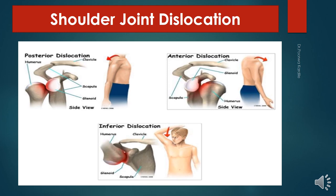This slide is of shoulder dislocation. The shoulder joint is the most mobile joint — it is multi-axial with a wide range of movement, but mobility compromises stability. The shallowness of the glenoid fossa and weak ligaments make the joint unstable. The strength is provided by the tendons of the rotator cuff, formed by subscapularis anteriorly, supraspinatus superiorly, and infraspinatus and teres minor posteriorly; these tendons fuse to the underlying capsule.